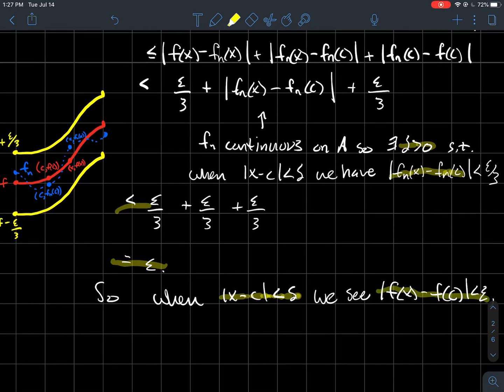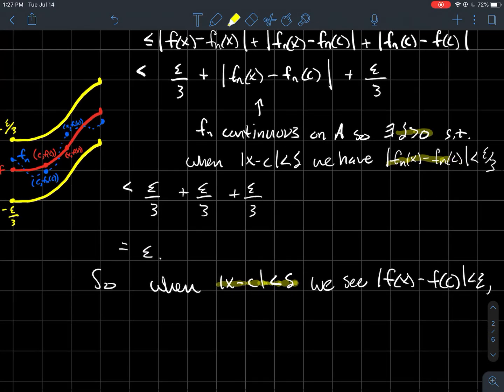We just showed that the difference in the outputs is eventually less than epsilon. And so that's what I'm just restating right here. And of course, we just show that that f satisfies the definition of continuity at c.